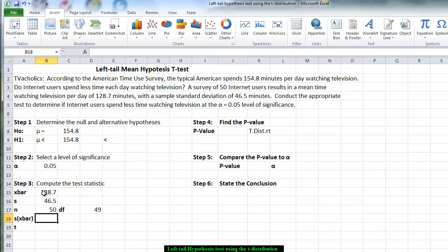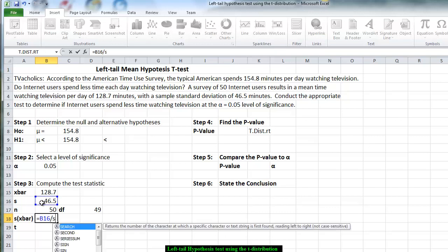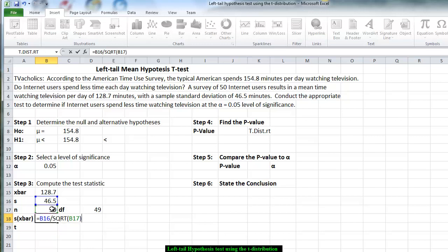In order to compute the test statistic, we have almost everything we need. The only thing we need is the standard error or the standard deviation of all groups of size 50. So we use the formula that we take the standard deviation divided by the square root of the sample size, which is 50.